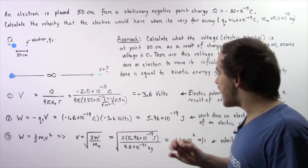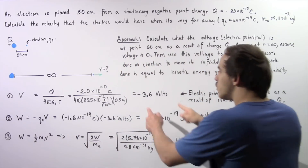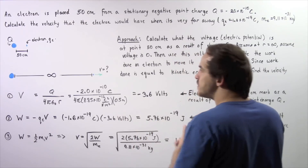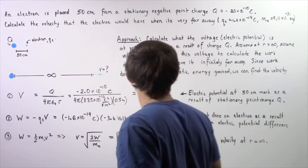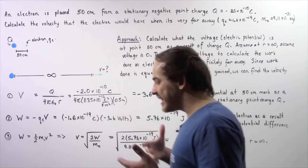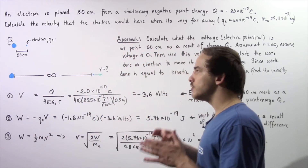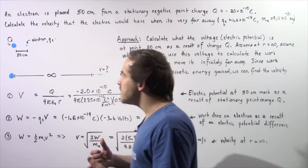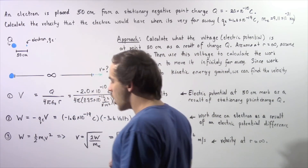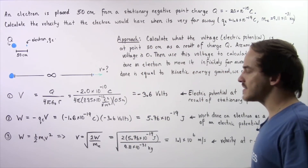Plugging in our values, we find the electric potential is approximately negative 3.6 volts. The reason this is a negative value is because the charge Q is negative. This is the electric potential at the 50 centimeter mark as a result of the stationary point charge Q. As a result of this electric potential, our electron, which also has a negative charge, will begin to move — the electric field produced by the stationary point charge creates a force that propels the electron in the positive direction along the x-axis.